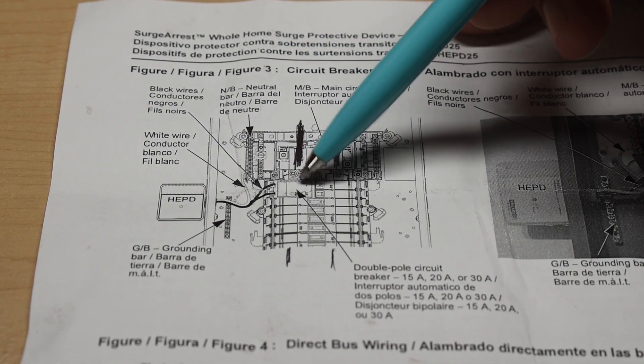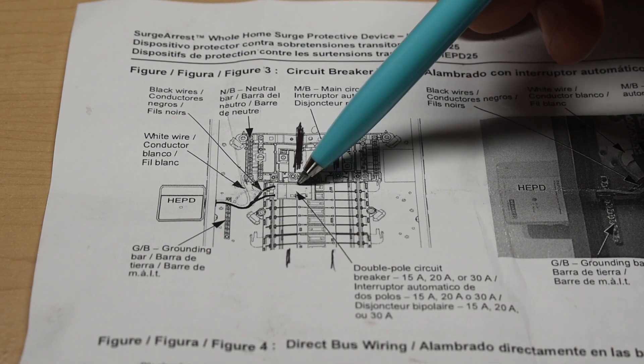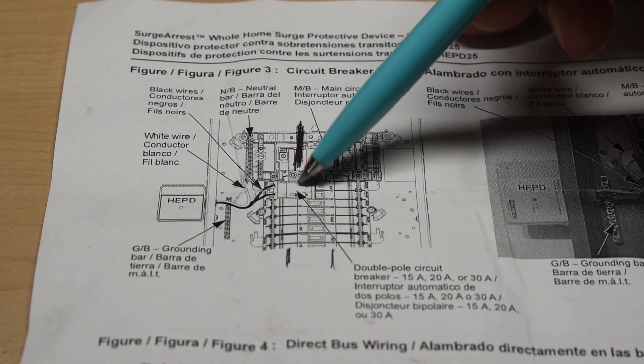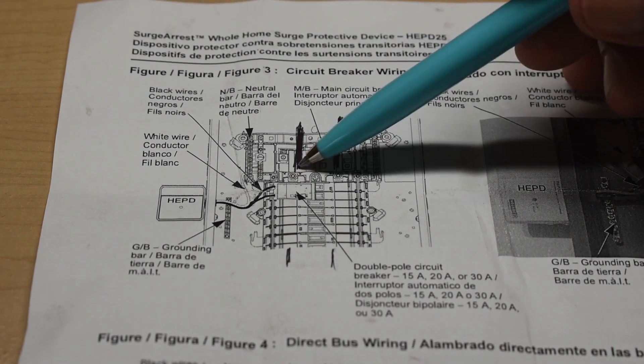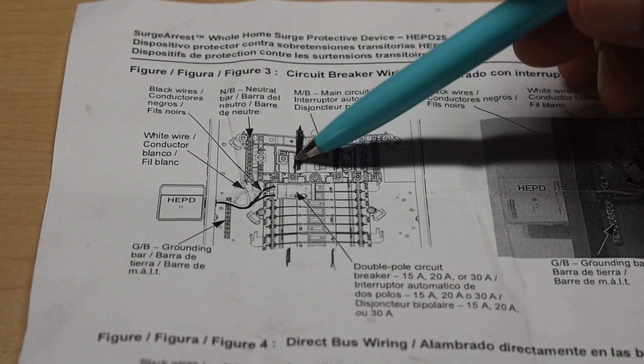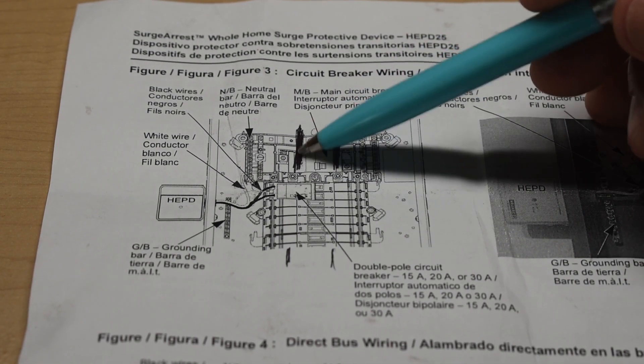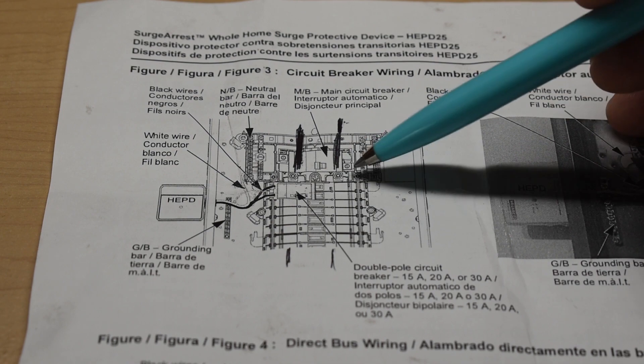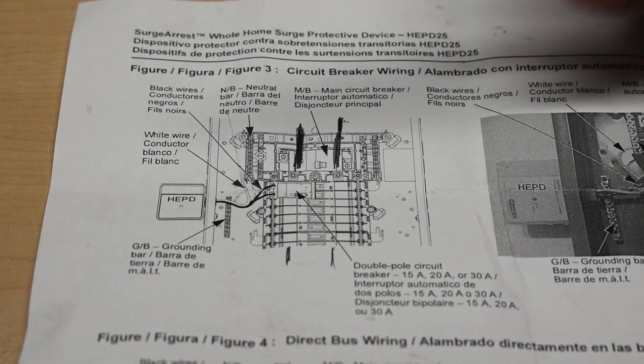Now, if you don't have a double pole breaker, you can also use two single pole breakers. But it's extremely important that both single pole breakers are not on the same bus bar. So make sure that one is clipping in to this bar and the other one is clipping into the opposite bar. Then you can do exactly as shown.